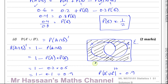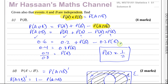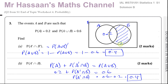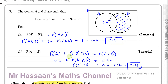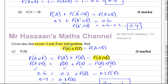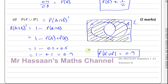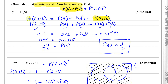That concludes this question on the Solomon B paper. I hope that was clear. This question is all about set notation. Drawing Venn diagrams is really useful here, along with understanding the formulas for independent events — the multiplication rule is only true if events are independent. Also, the addition formula P(A∪B) = P(A) + P(B) − P(A∩B) is very important to know.